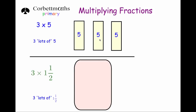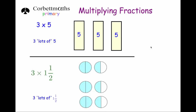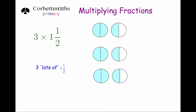Finally, let's look at how to multiply mixed numbers by whole numbers. Just as 3 times 5 is 3 lots of 5, we can consider 3 times 1 and a half as 3 lots of 1 and a half. Looking at this carefully: 3 lots of 1 and a half gives us three ones and three halves — two halves make a whole, so that gives us 4 and a half.